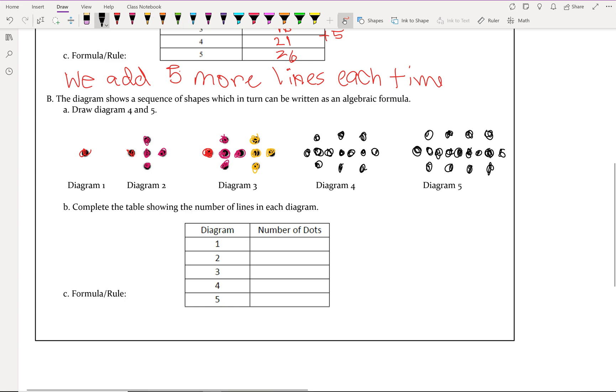Complete the table showing the number of dots in each diagram. In one, we have one dot. In two, we have five dots. In three, we have nine dots. In four, we have thirteen dots. And in five, we have seventeen dots.